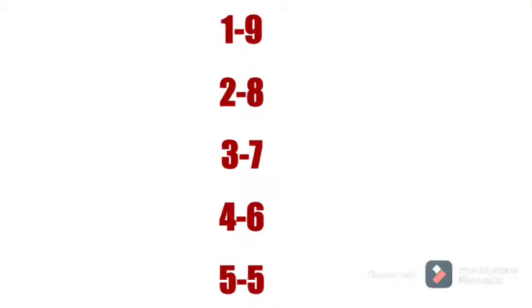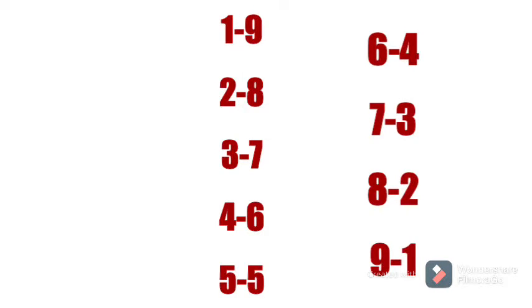Now we will go to big friends. In big friends, 1 through 9 are all called the big family. In small friends, 1's friend is 4 — but in big friends, 1's friend is 9, 2's friend is 8, 3's friend is 7, 4's friend is 6, 5's friend is 5, 6's friend is 4, 7's friend is 3, 8's friend is 2, and 9's friend is 1.